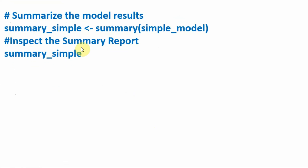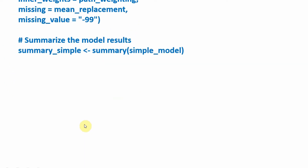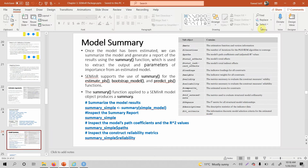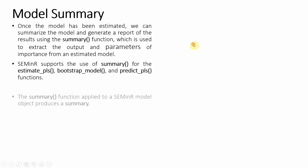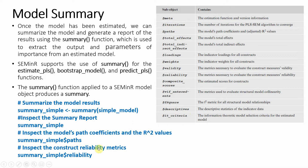You can inspect the summary report by just calling that object, but if you want specific details — maybe paths, maybe reliability, or other details — you can have specific output. I can have path coefficients here, I can have reliability here, and other information as well. You can have meta information, iteration paths, total effects, and all other information just with the dollar sign and then the sub-object. So summary_model and then the dollar sign and then the object — f_square, descriptives, whatever you want — all of it is available.